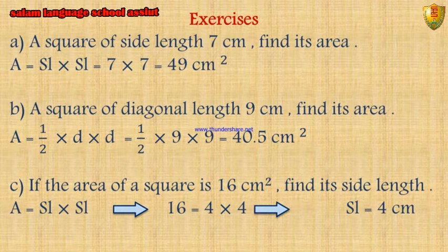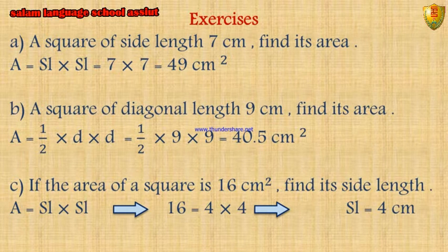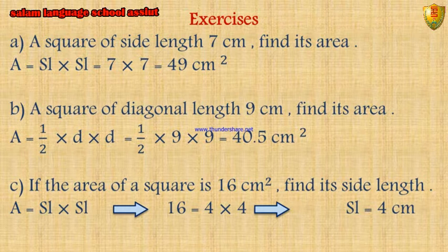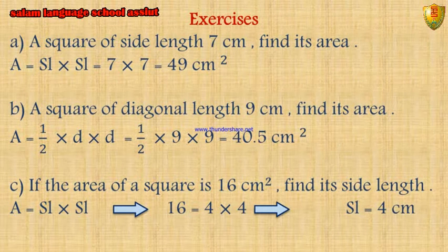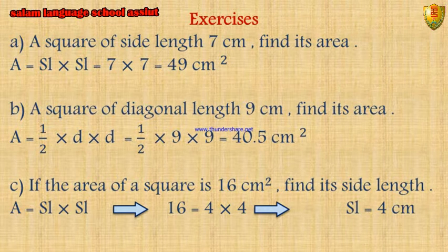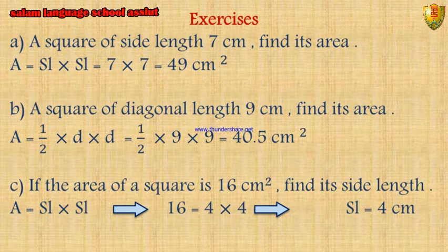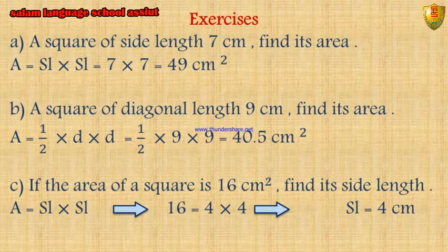If the area of a square is 16 cm², find its side length. Here we know the area but we don't know the side length. Area equals side length times side length, and we know the area is 16 cm². From the times table, 4 times 4 is 16, so the side length equals 4 cm.